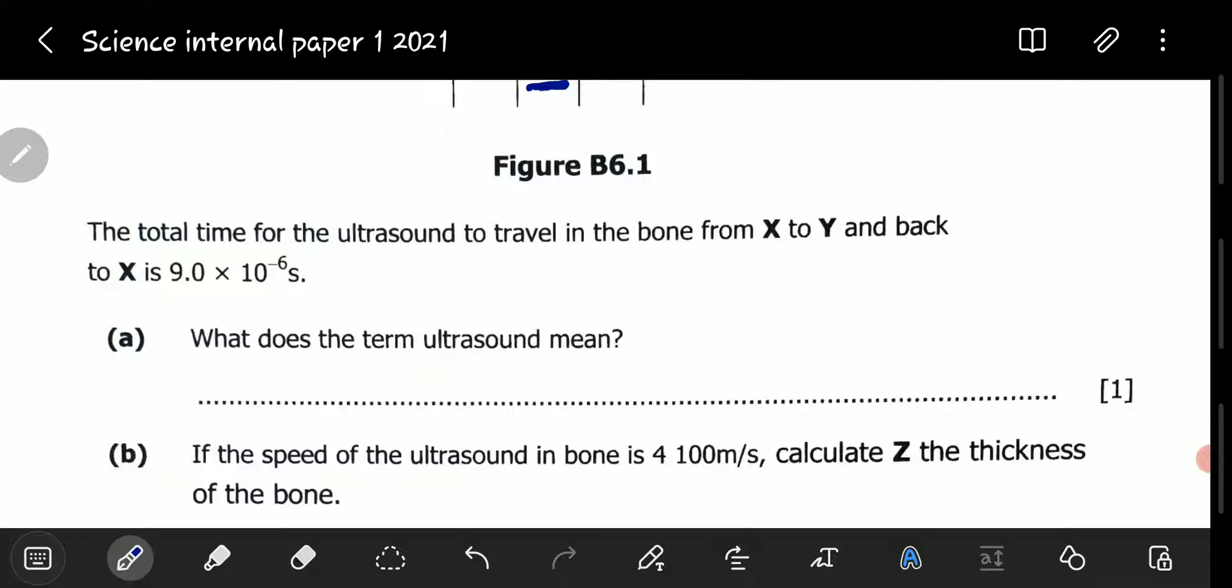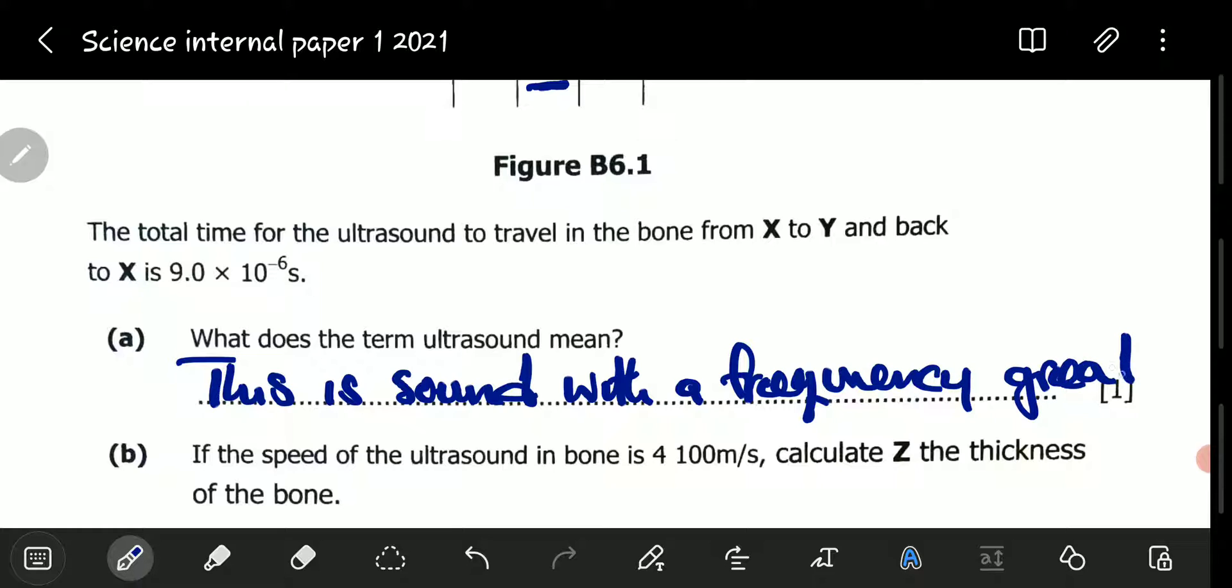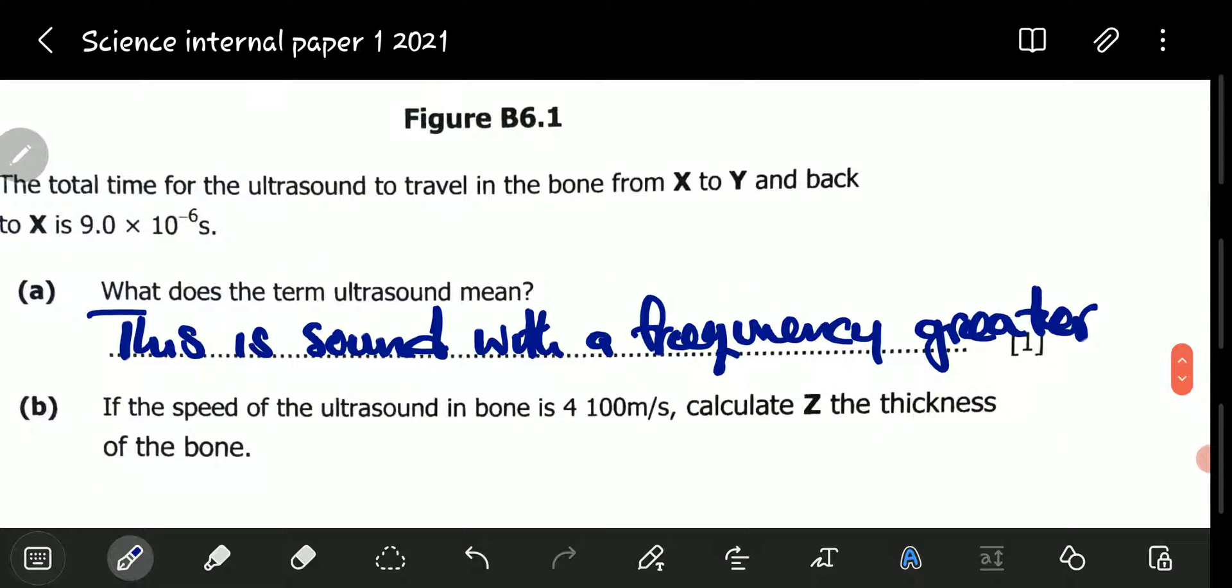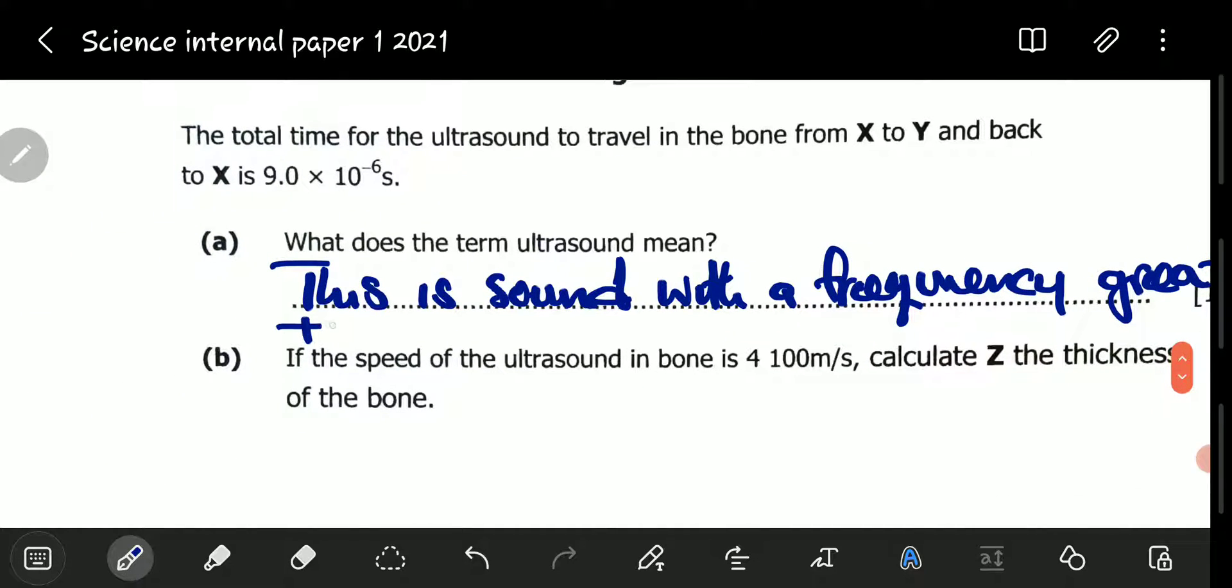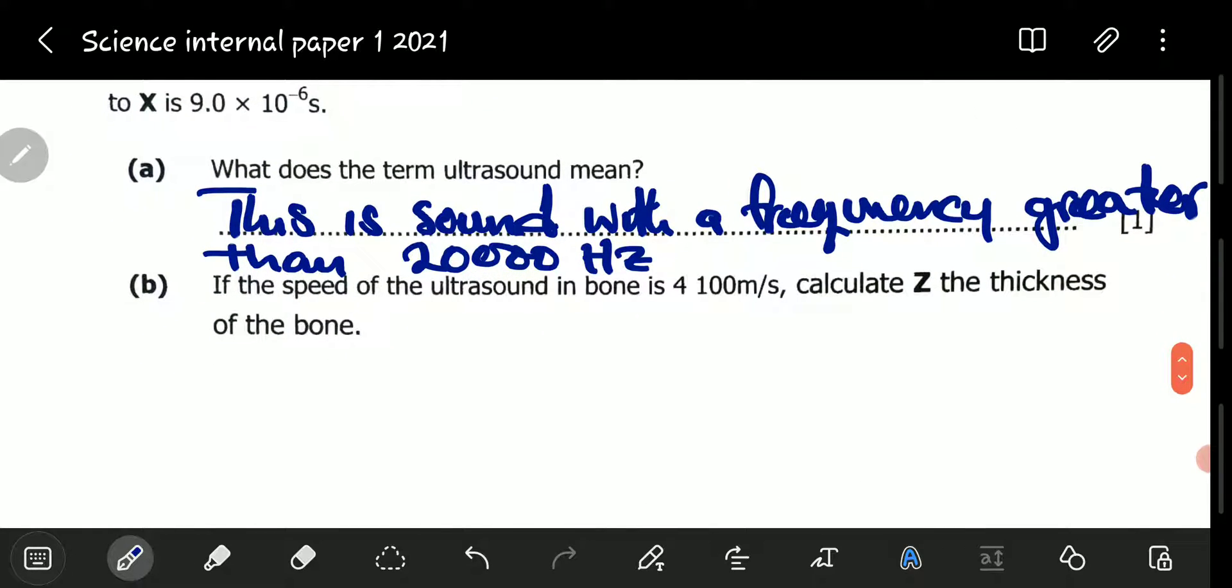This is sound with a frequency greater than 20,000 hertz. The maximum limit a human being can ever hear is 20,000 hertz. So, any sound above 20,000 hertz is classified as ultrasound. That is ultrasound.